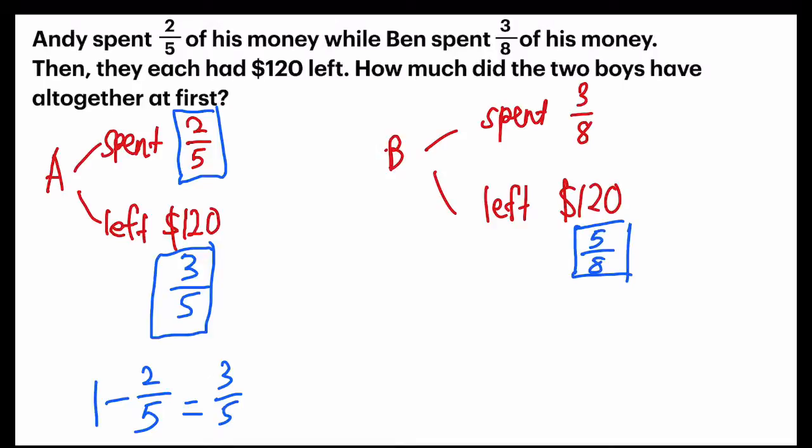Now, taking a look at that, $120 is equal to how many parts for Andy? $120 will be equal to 3 parts, and the bottom, which is the denominator, which is 5 units, is the total which we are finding.